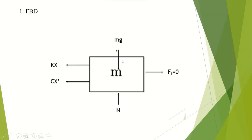To derive the displacement equation we follow the same steps as we did for free undamped vibrations. We start by drawing the free body diagram. We have five forces acting on the mass: the weight of the mass, the normal reaction force, friction force, spring force, and the damping force. The weight and normal force cancel each other out and the friction force is neglected. So we are left with the spring force Kx and the damper force Cx dot.